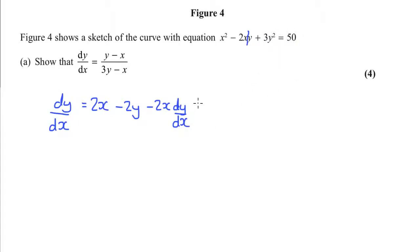Then, we need to do the 3y squared. We're going to do the chain rule on this. We're going to pretend that the y is an x, and we're going to differentiate it, so that's 6y. But then, we need to times by the derivative of y, because we pretended it was an x, and that's dy by dx again.